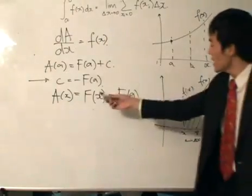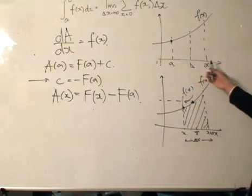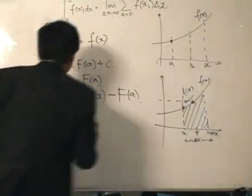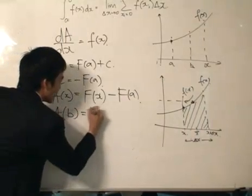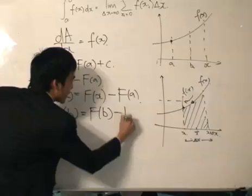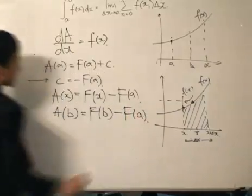Because we established c equals this over here. And what do you want to find? We want to find the area from a to b, we will let x equal to b. x equals b, we will get F(b) take away F(a).